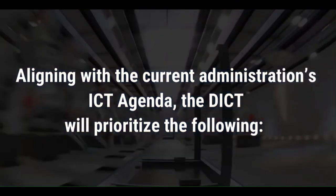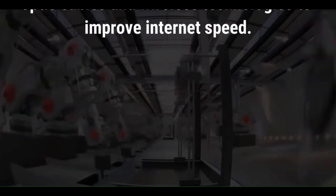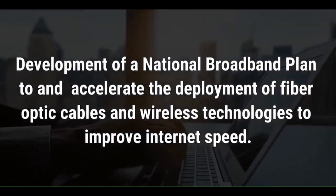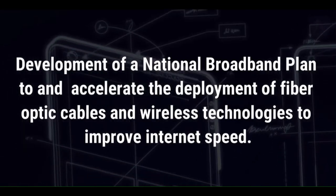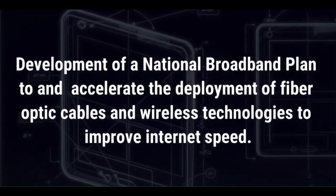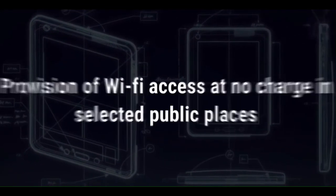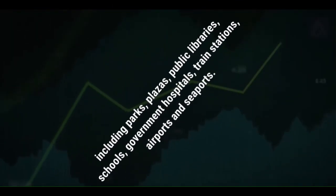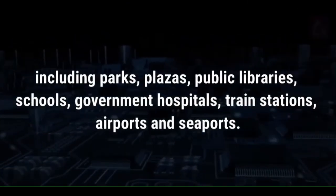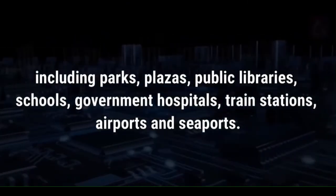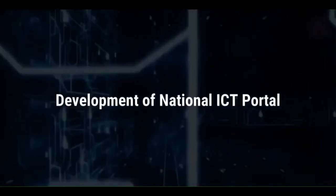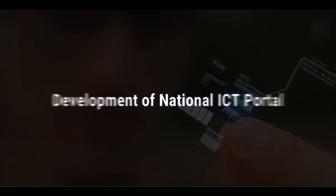The DICT will prioritize the following: development of a national broadband plan to accelerate the deployment of fiber optic cables and wireless technologies to improve internet speed; provision of Wi-Fi access at no charge in selected public places including parks, plazas, public libraries, schools, government hospitals, train stations, airports, and seaports; and development of a national ICT portal.